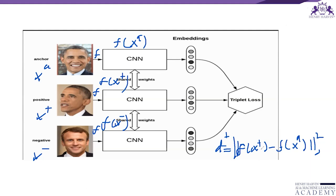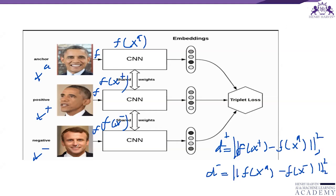Similarly, we find D negative — the squared L2 norm of the distance between the negative sample and the anchor. We hope that the network F has the property that feature vectors from the same class are nearby, while feature vectors from different classes are well separated. So D positive should be small because the positive sample and the anchor belong to the same class, but D negative should be large because the negative sample is from a different class.